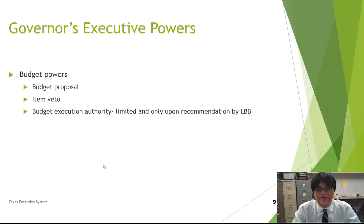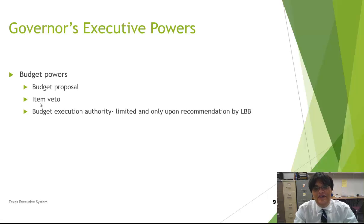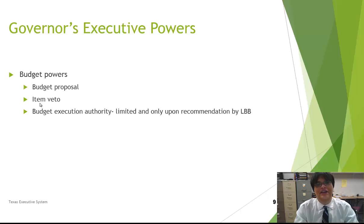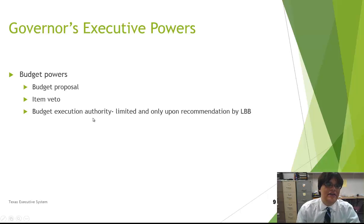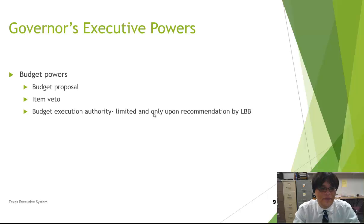Within executive powers, the governor also has budget powers. He proposes a budget every year, though it's simply a proposal and not necessarily what passes through the legislative branch. The governor also has the item veto, which allows him to nix specific items in the budget he doesn't approve of — this is somewhat controversial since the legislative branch drafts the budget. Once the budget is passed, the governor has budget execution authority, which is limited and only upon recommendation by the legislative budget board.